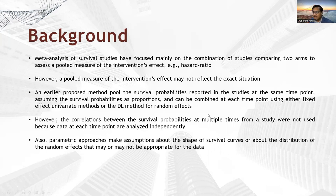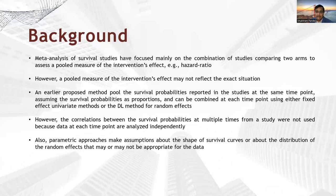The earlier proposed methods for pooling the survival probabilities treated survival probabilities as proportions, which can be combined at each time point using either fixed effect univariate methods or the DL method for random effects. However, one disadvantage was that the correlations between the survival probabilities at multiple follow-up time points were not considered, because each time point was analyzed independently. Also, if we go with parametric approaches, they have a strong assumption regarding the shape of the survival curve.